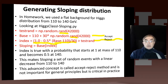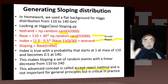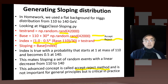So if this number is, say, 0.75, and the random number is uniform between 0 and 1, then 75% of the time we accept this event and 25% of the time we reject it. This is the accept-reject method, and it's the universal way which I used to use continuously for all sorts of distributions.